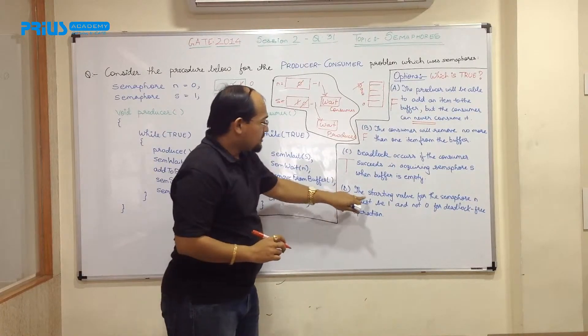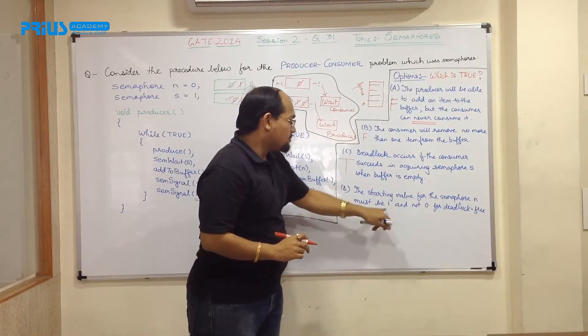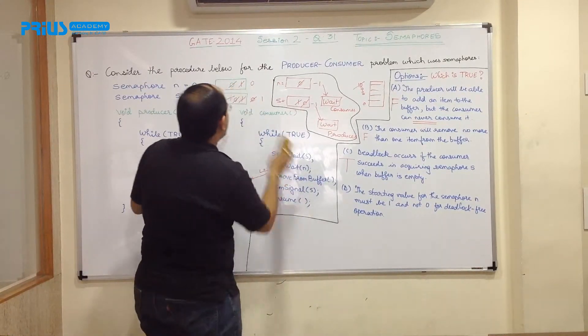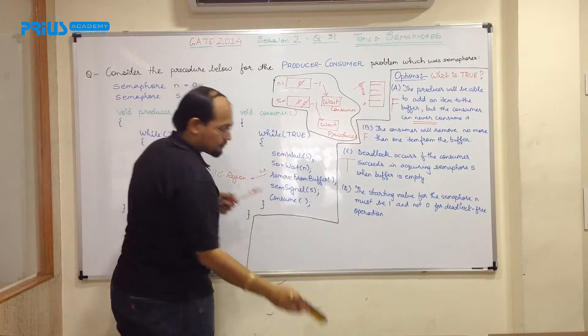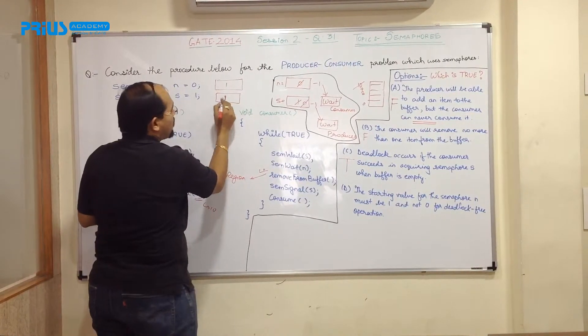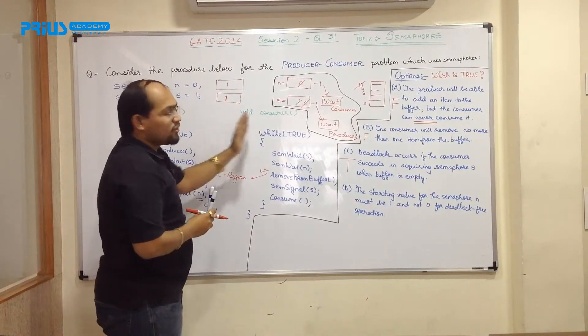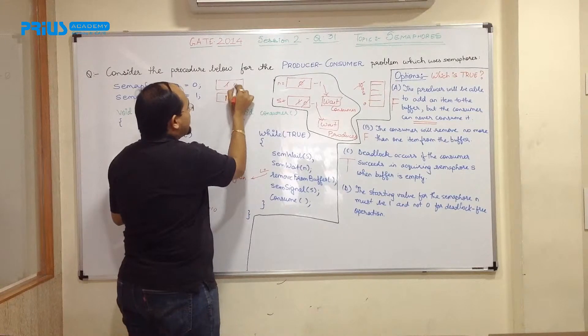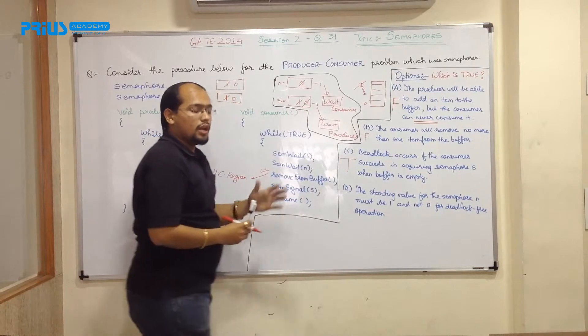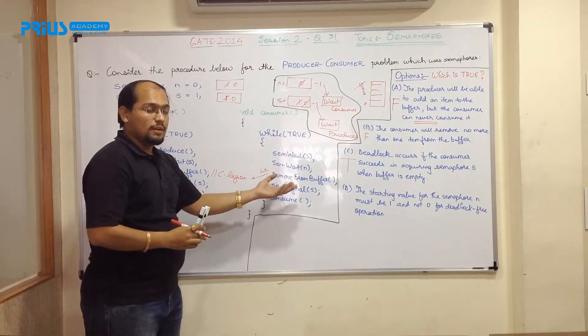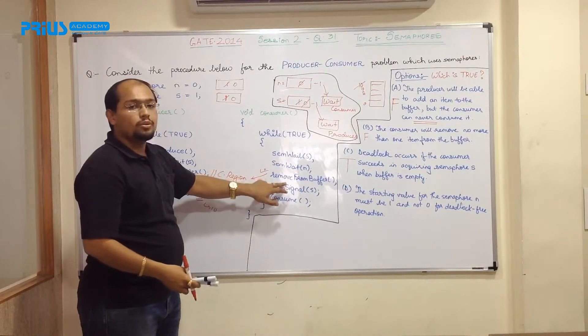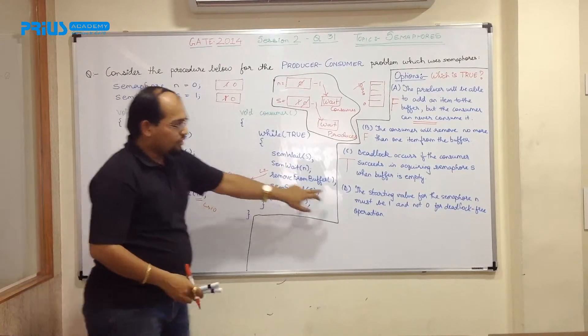Let us justify the last option. The starting value for the semaphore N must be 1 and not 0 for a deadlock free operation. Now what will happen if your starting value is N? Let us see that. So I am assuming your initial N value is 1 and S value is 1 and if consumer is executing first, it will make this 0 and also this to be 0 and it will remove from buffer. Now, if consumer is consuming for the first time and if producer does not produce anything, how can he consume? Nothing is there to be consumed, right? So that means this will create a problem.